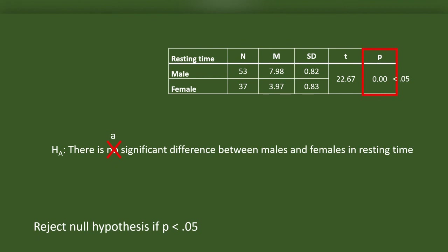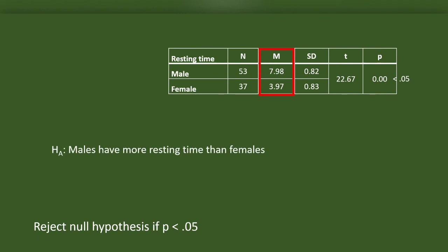Now who has a higher resting time? For this we have to refer to mean. The mean for males is 7.98 and mean for females is 3.97. We are moving to another precise alternative: males have higher resting time than females. Now it is no more a hypothesis. It's our finding.